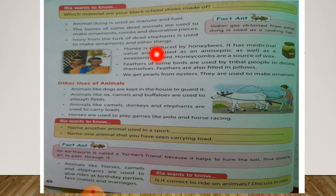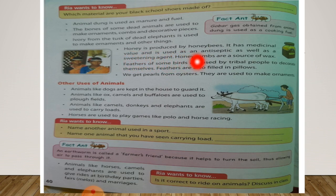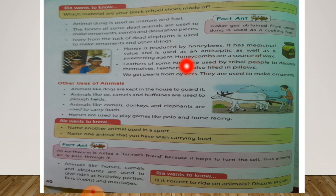Next, honey is produced by honey bees. It has medicinal value and it is used as an antiseptic as well as a sweetening agent. Honey combs are a source of wax. Medicinal means clinical value, and antiseptic means disinfectant.